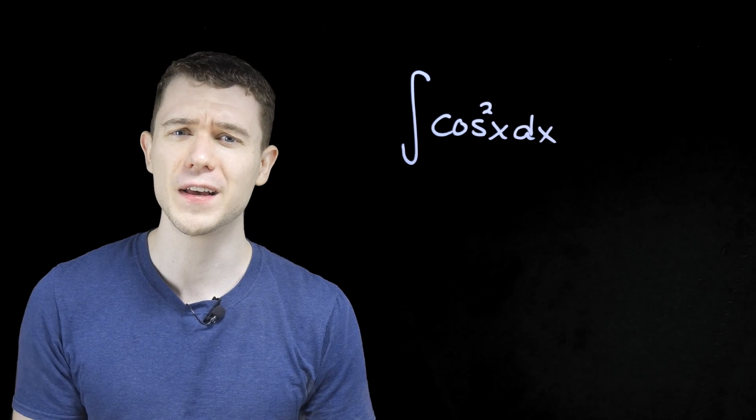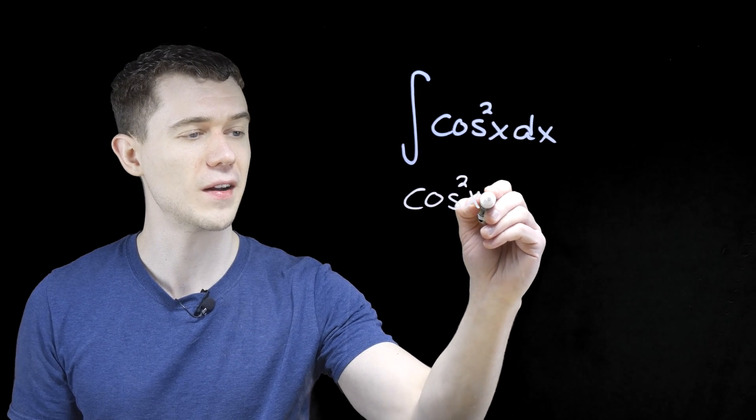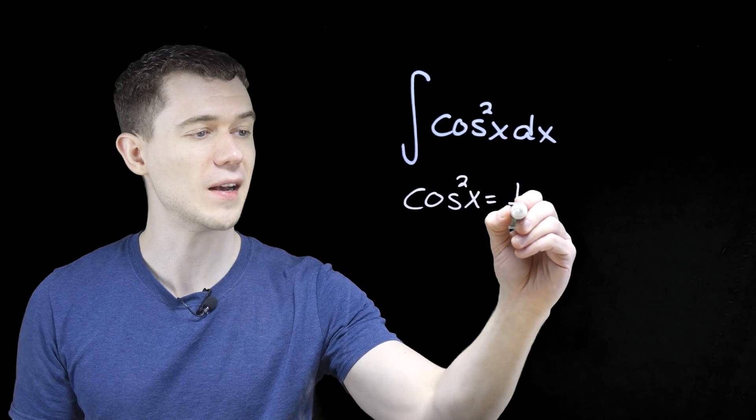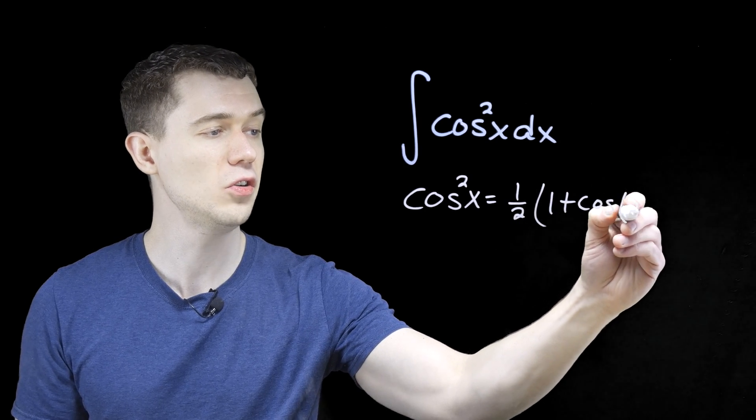Instead, we're going to take advantage of a trig identity, a nice identity that cosine squared x, this is the same as 1 half the quantity 1 plus cosine 2x.